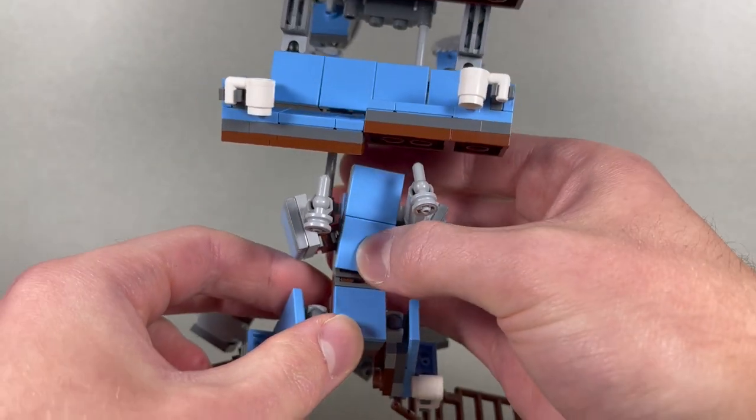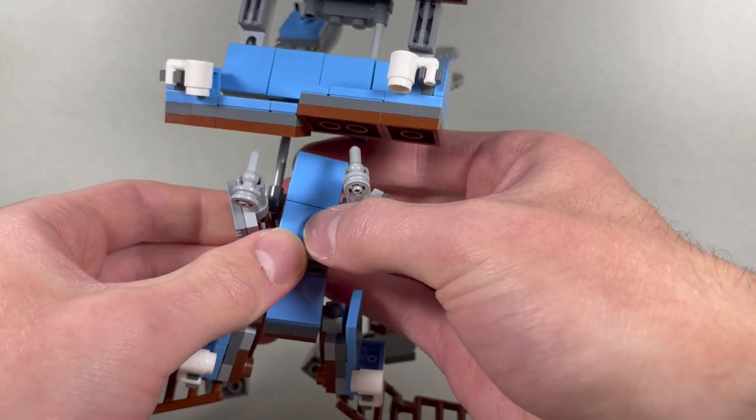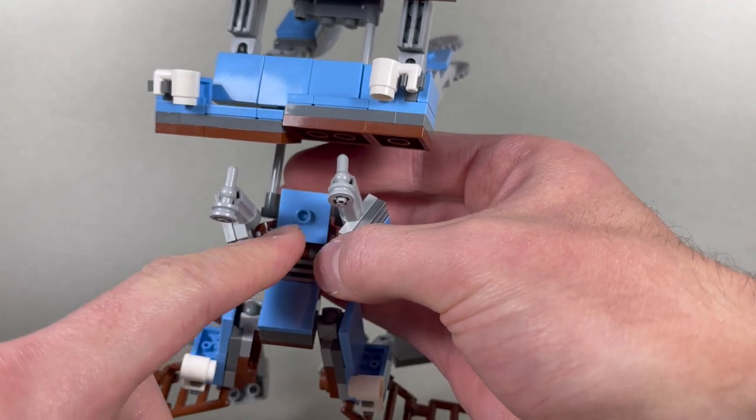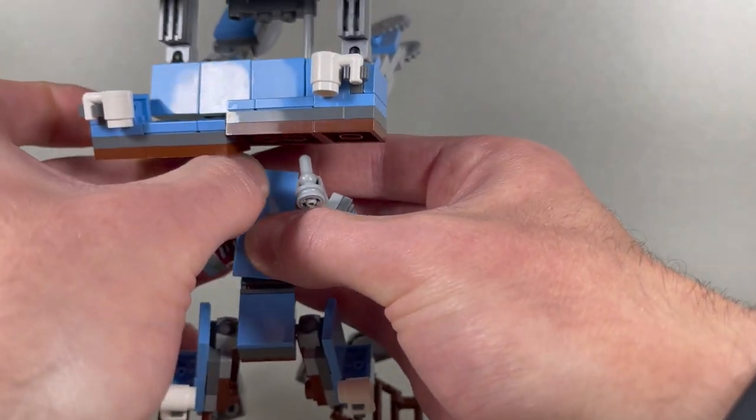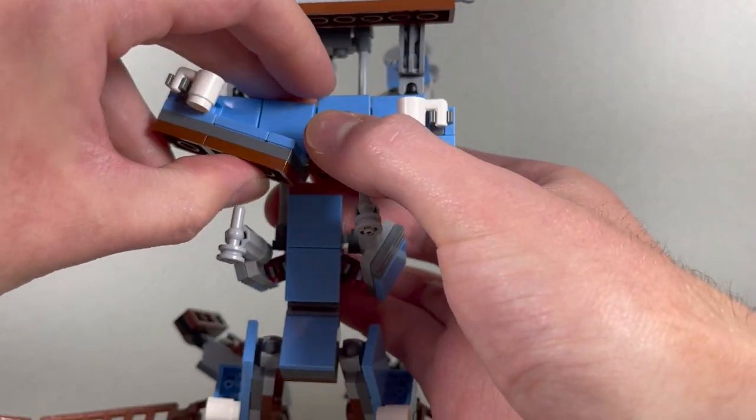Oh, and then when you transform it, I have a tendency to always want to grab right here, but that will pop this piece off just because it's connected by a 2x2 jumper. So something to remember is to just hold it in the middle of this piece. Alright.